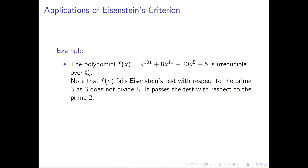However, it would fail the test with respect to lots of other primes. For instance, if I took the prime 3: it satisfies the first condition since 3 does not divide the leading coefficient, and 3 squared does not divide the constant term 6 — so we'd pass that last item. But 3 does not divide 8 and 3 does not divide 20, so we fail the second criterion. We only need to find one prime, and we can apply Eisenstein's test, which makes it a useful tool.